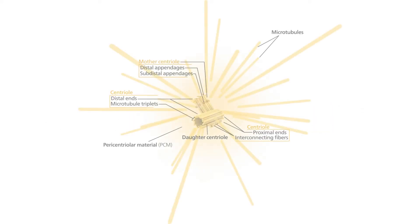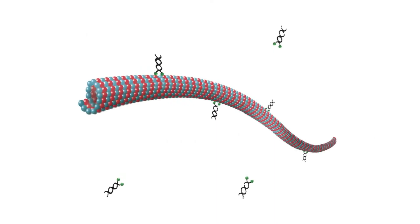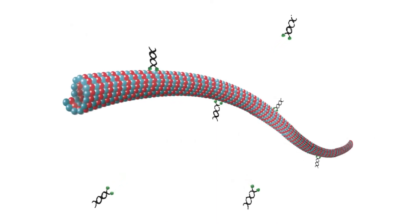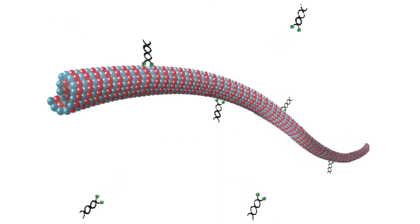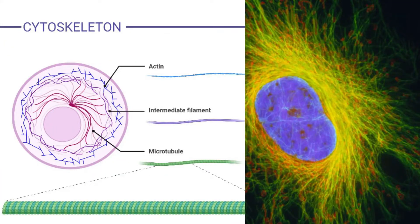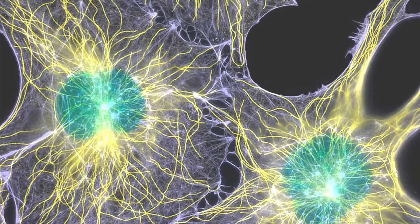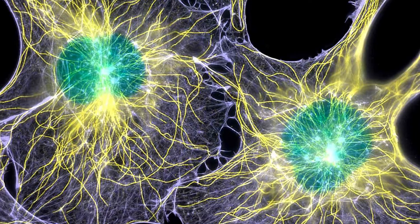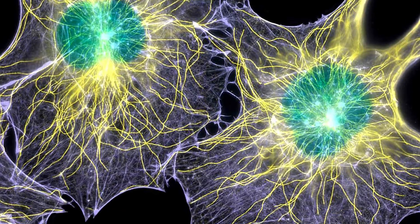Functions of Centrioles. Microtubule Organization. One of the primary functions of centrioles is to organize microtubules within the cell. Microtubules are dynamic protein filaments that form the cell's structural framework, known as the cytoskeleton. Centrioles help nucleate and anchor these microtubules, allowing them to maintain the cell's shape.